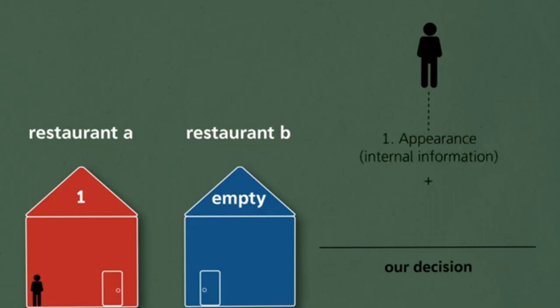If the second customer chooses to go to restaurant A, then the third customer will see two people eating at restaurant A and an empty restaurant B. I think you see where this is going. As people continue to join the crowd, they prompt others to do the same.